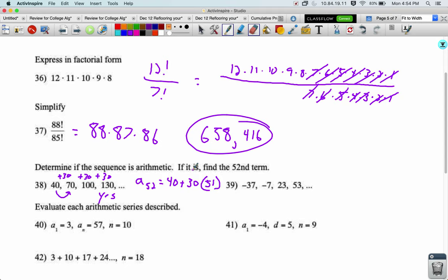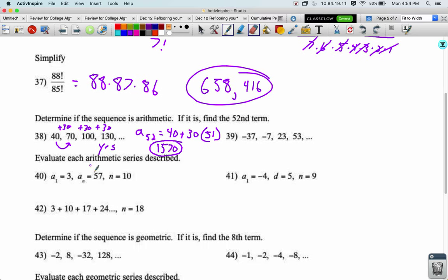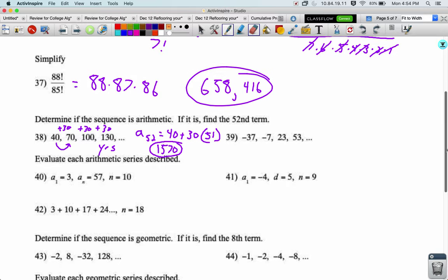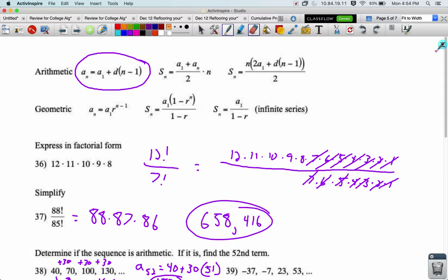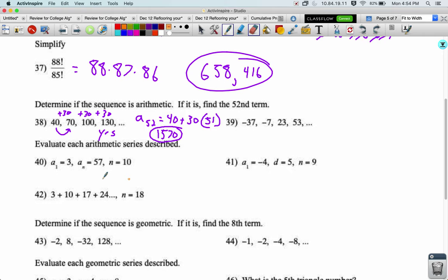Evaluate each arithmetic series described. We've got first and last terms and number of terms, so we can use this formula. We average the first and the last, so we're gonna do 3 plus 57 over 2, that'll average them, and then multiply by the number of numbers, times 10. That becomes 60 over 2, 30 times 10 is 300.